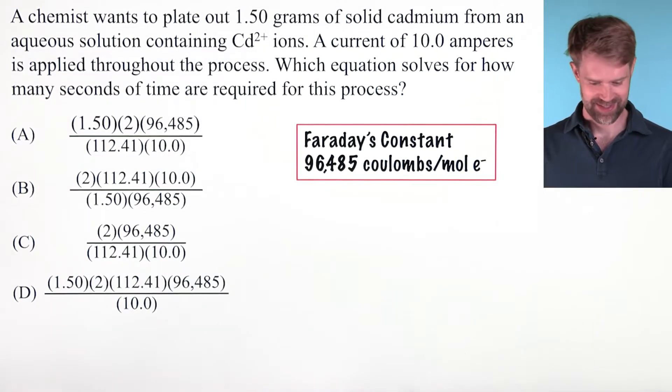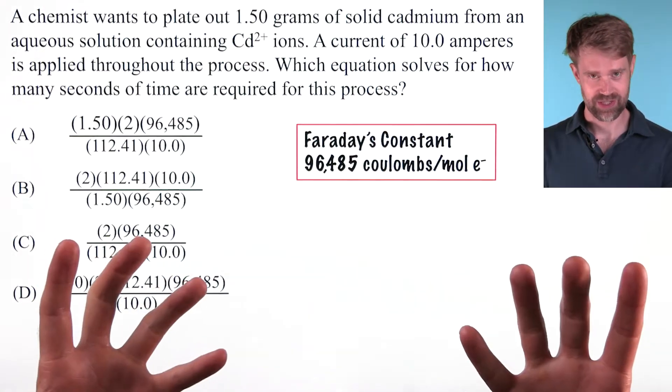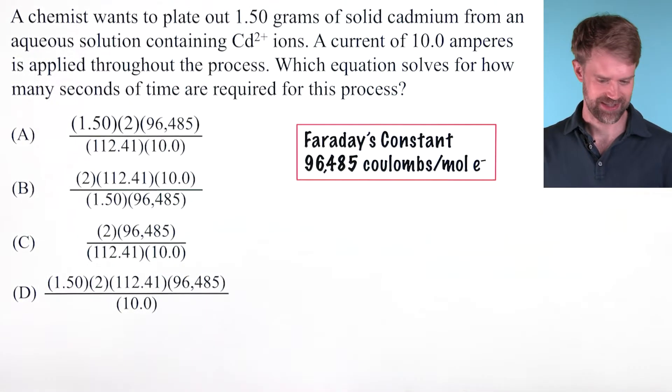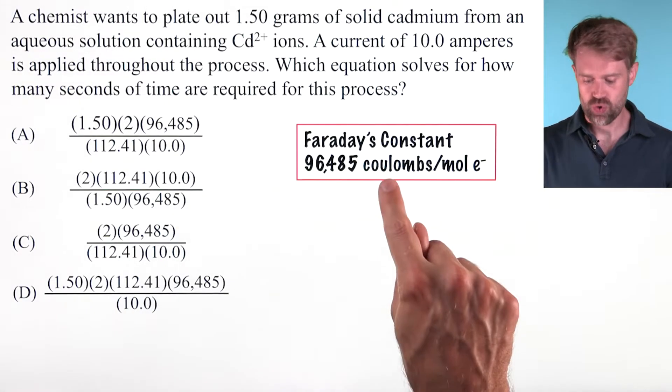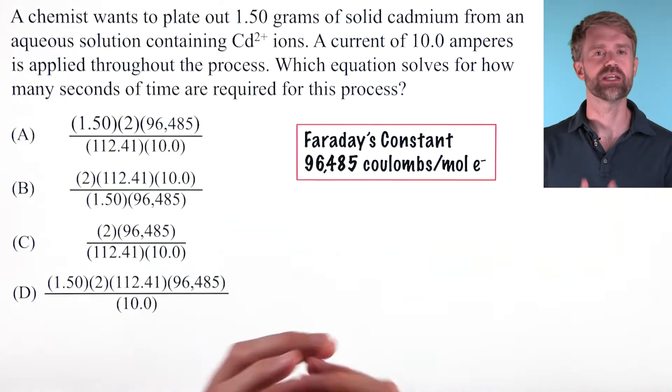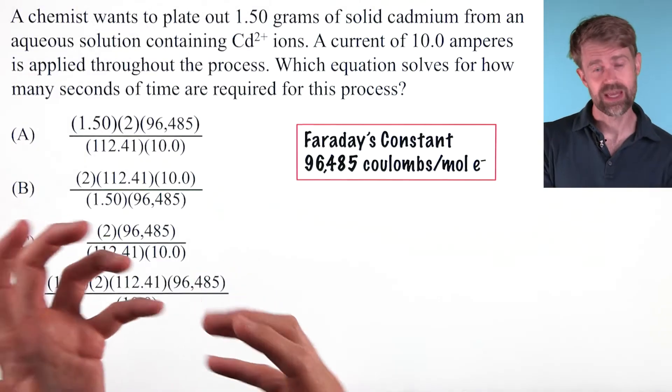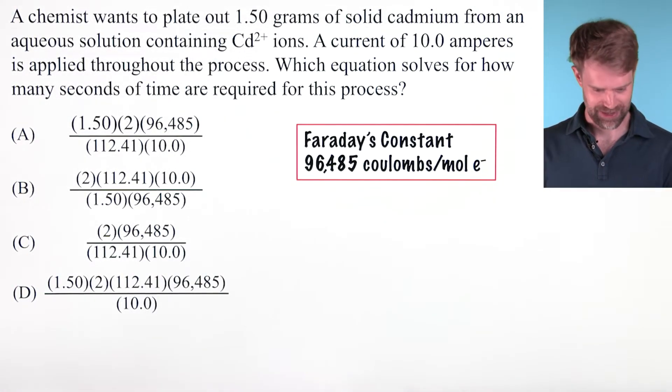Whenever you see a problem like this talking about electroplating and giving you current and grams, we're probably going to be doing a problem that involves Faraday's constant, which is given on the test as 96,485 coulombs per mole of electrons. Faraday's constant is useful because it allows us to go between moles and current. This is going to be a key part of the problem.